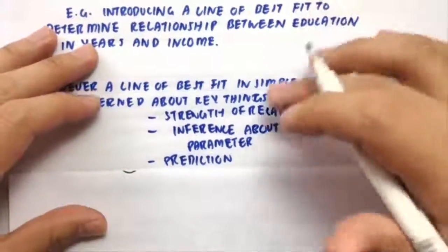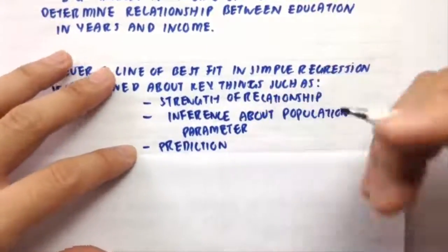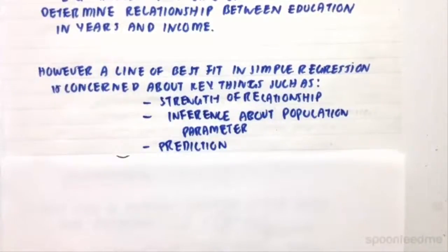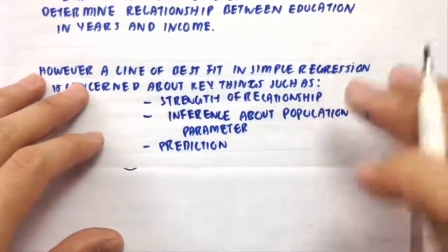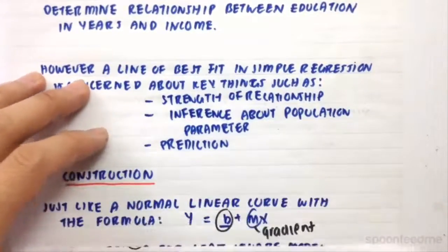And then lastly, the prediction. So given a certain amount of education, years of education that I've gone through, how much income would I receive according to the model?